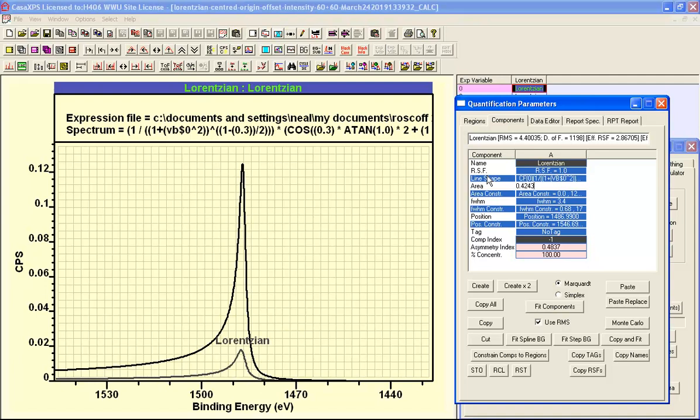When I press return, you can now see the line shape that has been created is based on the same expression that was used to create these data. If I now say fit, you can see that the line shape is identical to the data.